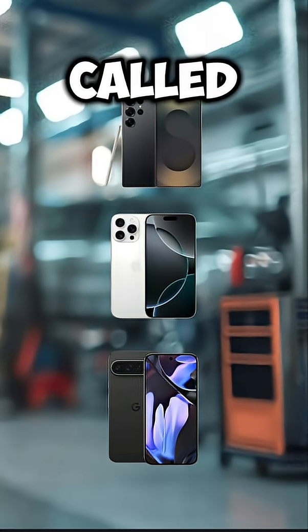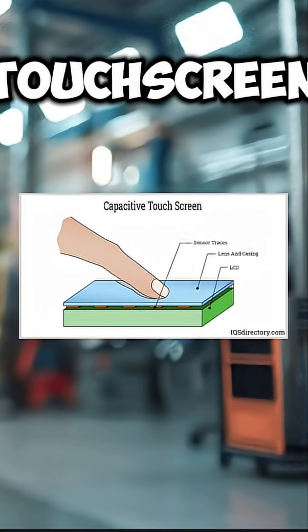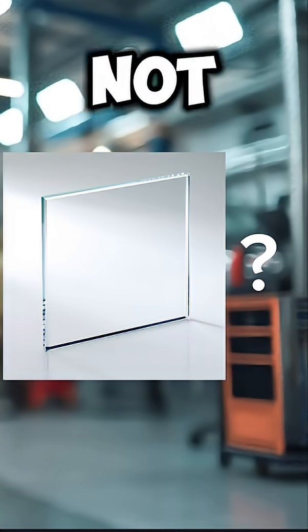Most modern phones use something called a capacitive touchscreen. It's just a sheet of glass, right? Not quite.